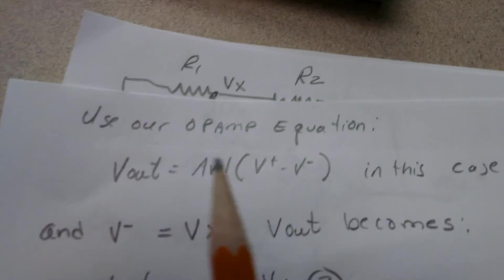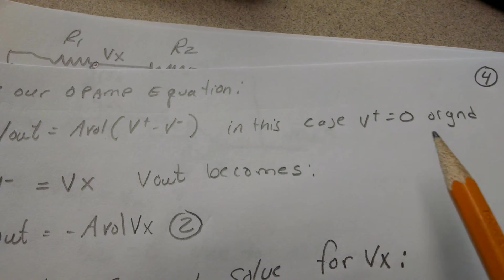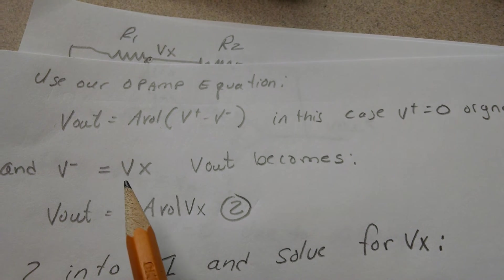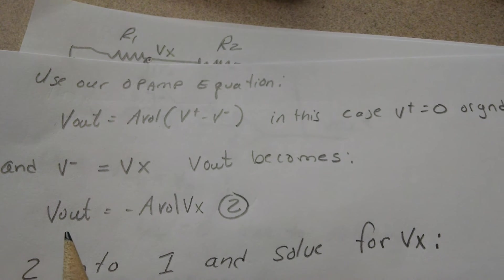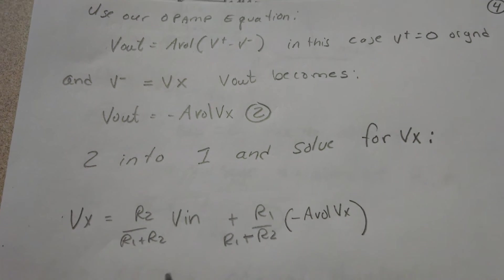We use our handy op-amp equation again, but in this case V+ is zero or ground because it's tied that way, and V- is Vx. Vout becomes negative open-loop gain times Vx. We substitute 2 into 1.